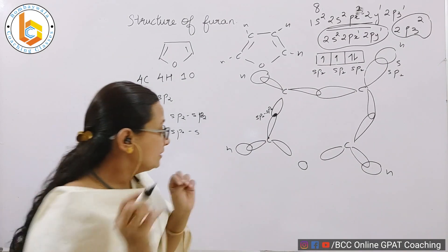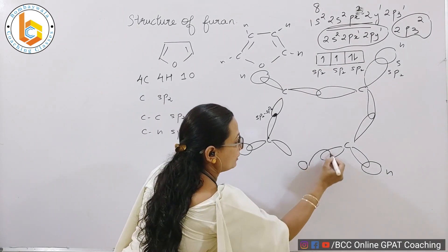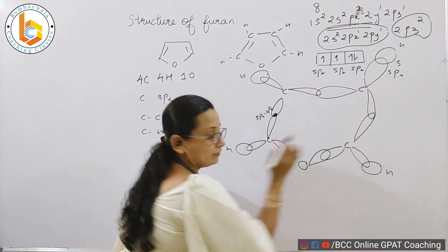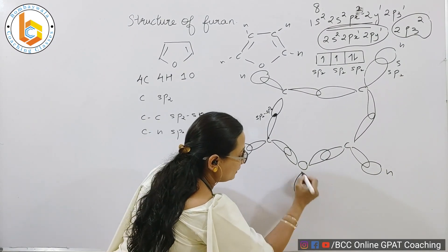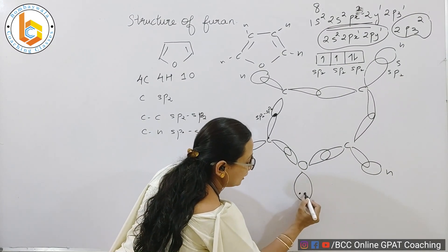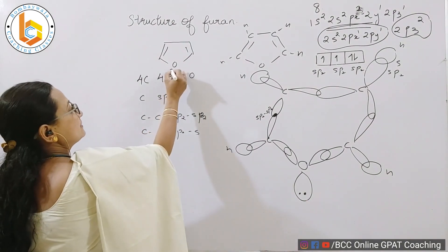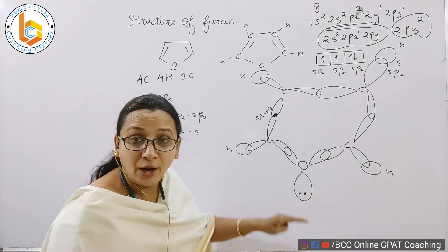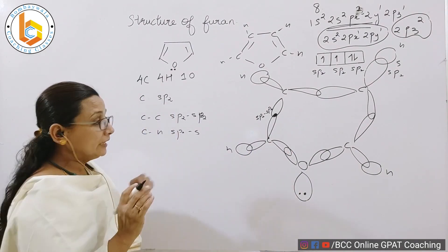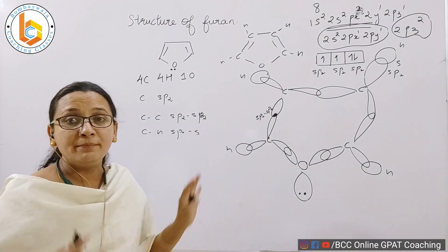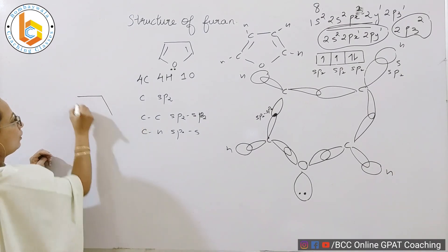This is oxygen showing sp2 hybridization, showing triangular geometry with one electron forming a bond with one carbon, one electron forming a bond with another carbon, and one orbital which contains two electrons. That is why furan is represented with two electrons lying outside the ring. Now I am making a pictorial diagram simpler to understand.